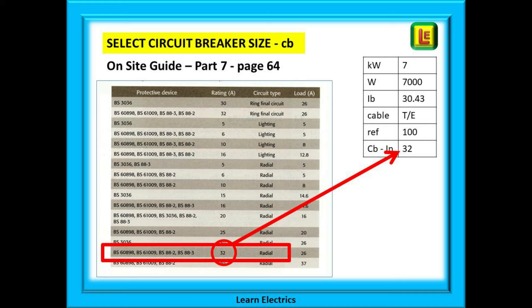This list shows the different types and sizes of fuses and breakers for different types of circuits — starting with ring circuits at the top, then lighting circuits, moving on to radial circuits. Towards the bottom for radial circuits we will find a BS EN 60898 breaker that is equal to or greater than 30.43 amps. In this case a 32 amp breaker. We can fill this in on our chart now: 32 amps.